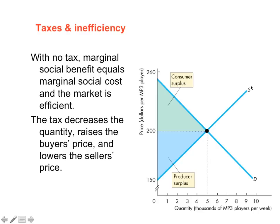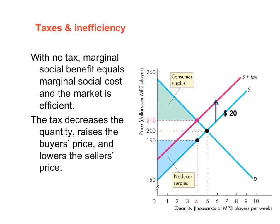What happens when you impose a tax on the supplier is that producers, when thinking about the price at which they're willing to supply the good, will now include the taxes imposed on them. So if a $20 tax has been imposed, and the supplier was initially willing to sell at $190, he now needs $190 for the cost of production plus $20 in taxes — so he's willing to supply the good at $210. The supply function therefore moves up by $20.